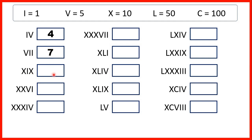XIX is 19, because X is 10, and then IX is 1 before 10, so that's 9. XXVI is 26, because XX is 2 tens, so that's 20, and VI is 5 and then 1, so that's 6.